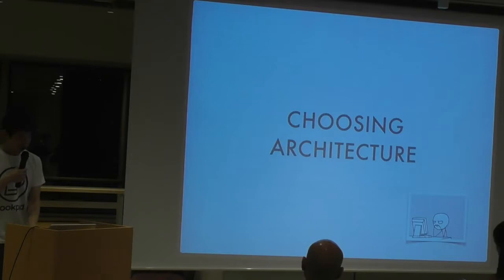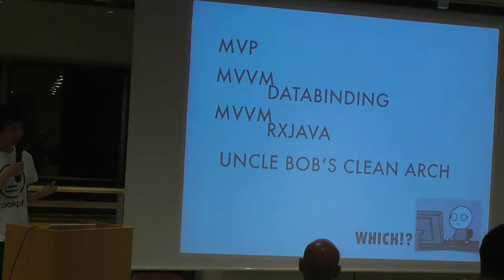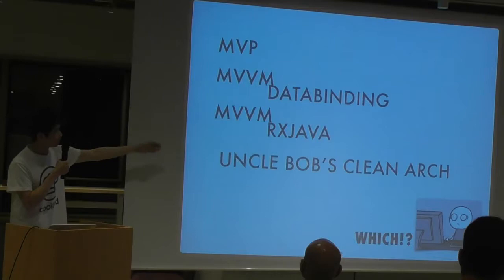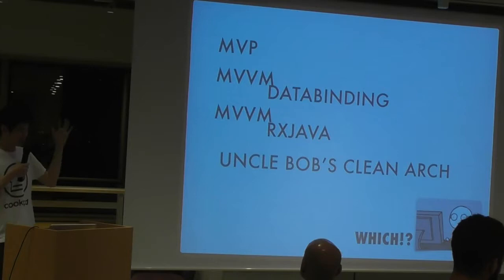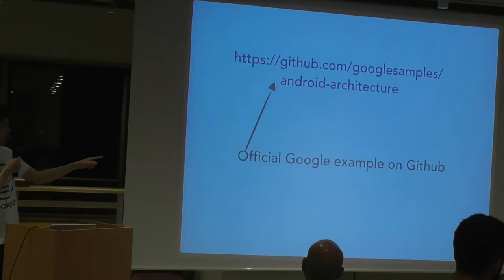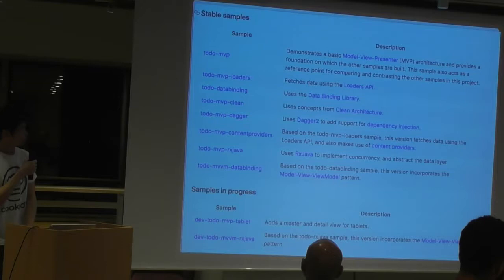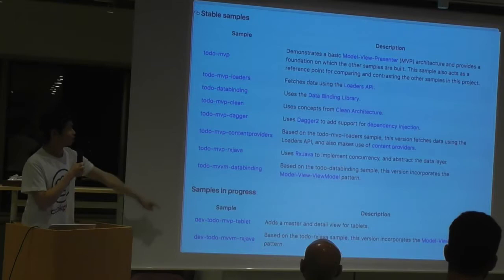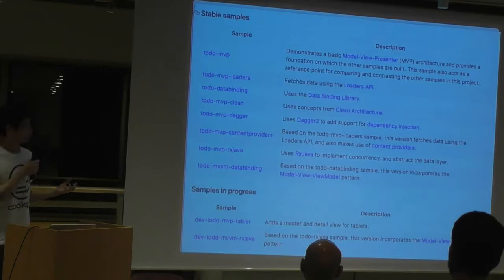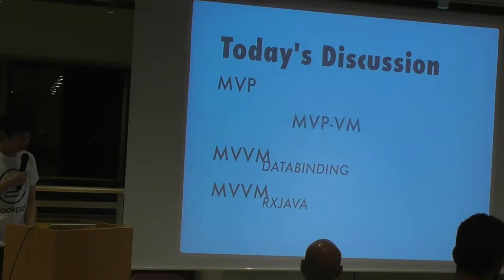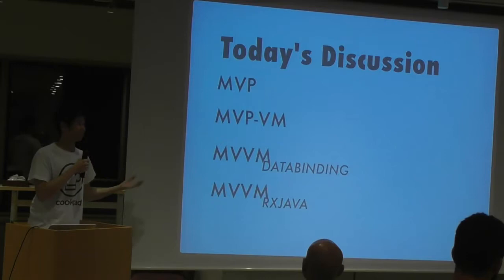So now we need to choose an architecture. When I started learning about these architecture patterns, I Googled and found so many: MVP, MVVM using data binding, MVVM using RxJava, Uncle Bob's clean architecture. Then I realized there's an official one from Google, and they actually implemented the same application using various different architectures. Today's discussion will cover MVP, two different ways to do MVVM, and one more that I named myself.